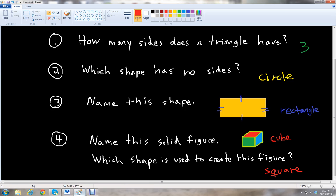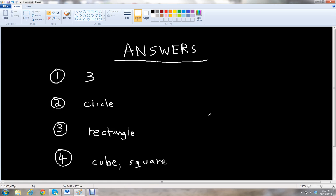Okay, so let's check our answer key. So we had three sides for a triangle. Circle had no sides. Rectangle was that shape. And then the solid was the cube, which is formed by the basic shape, the square.